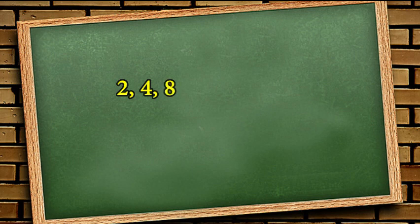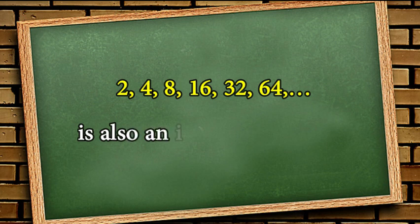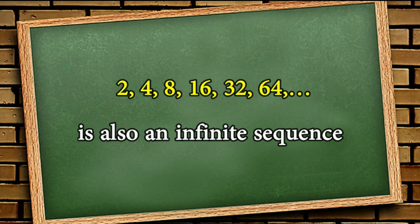The sequence 2, 4, 8, 16, 32, 64, and ellipsis is also an infinite sequence. Please note that the next terms are obtained by multiplying the previous terms by 2.